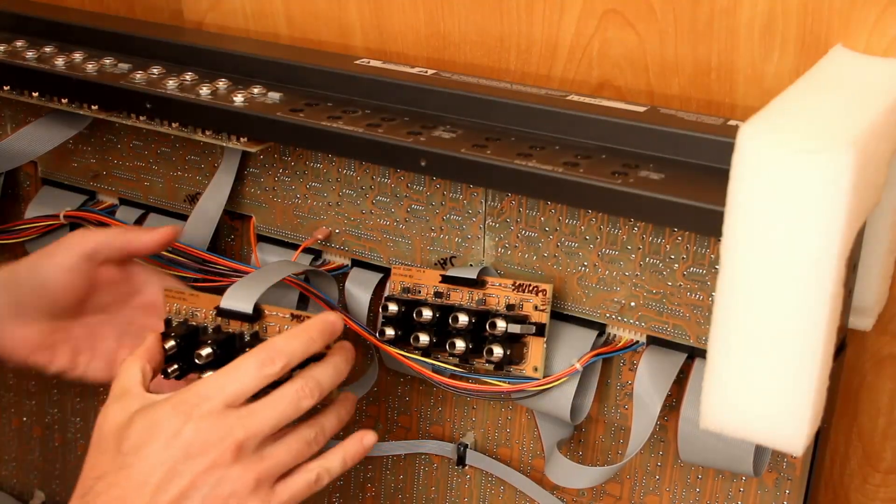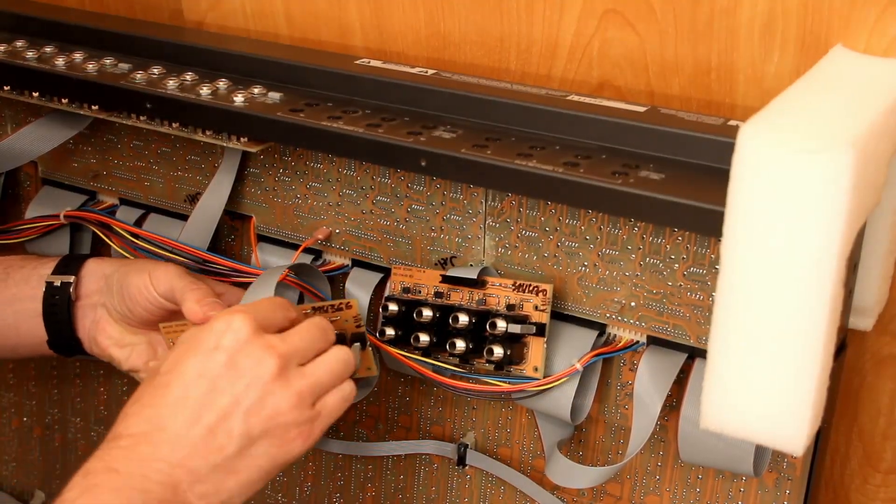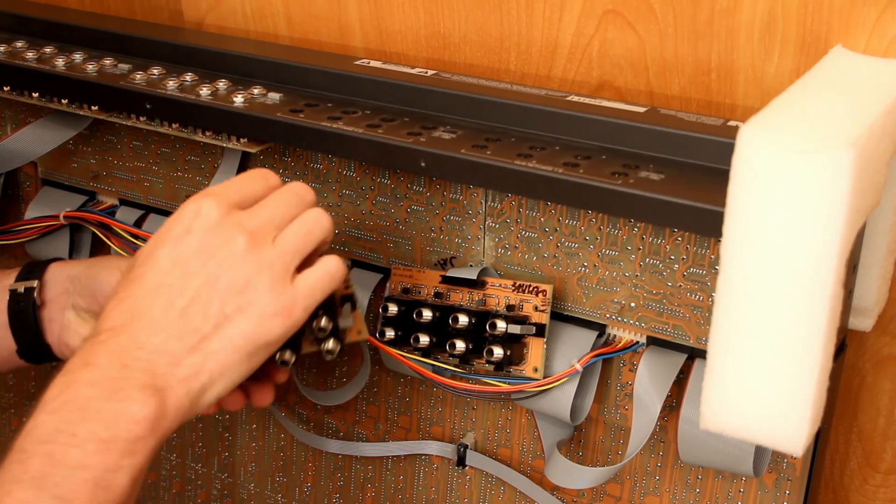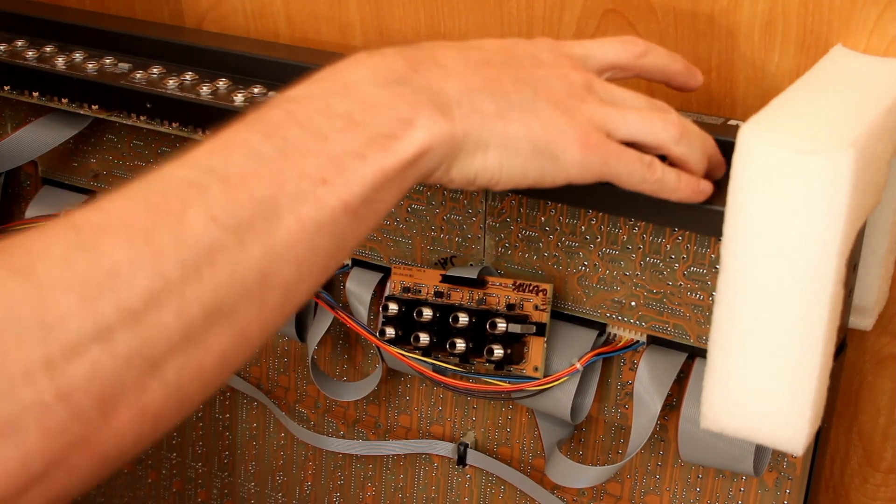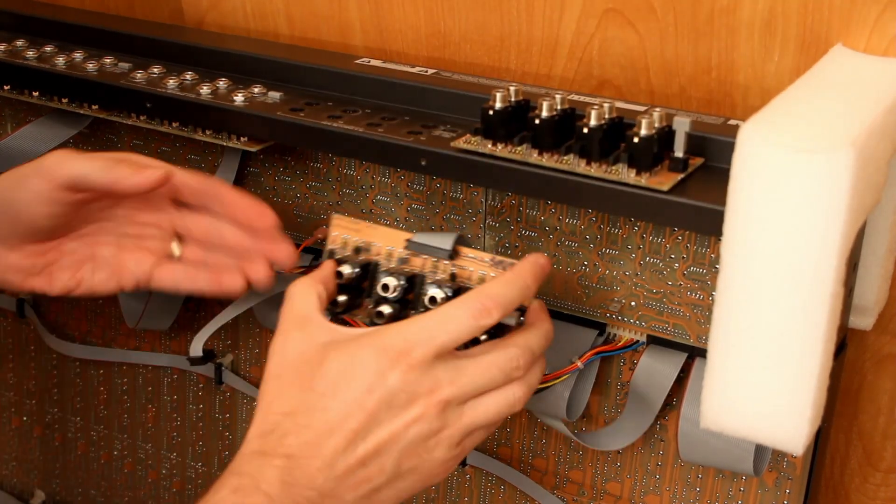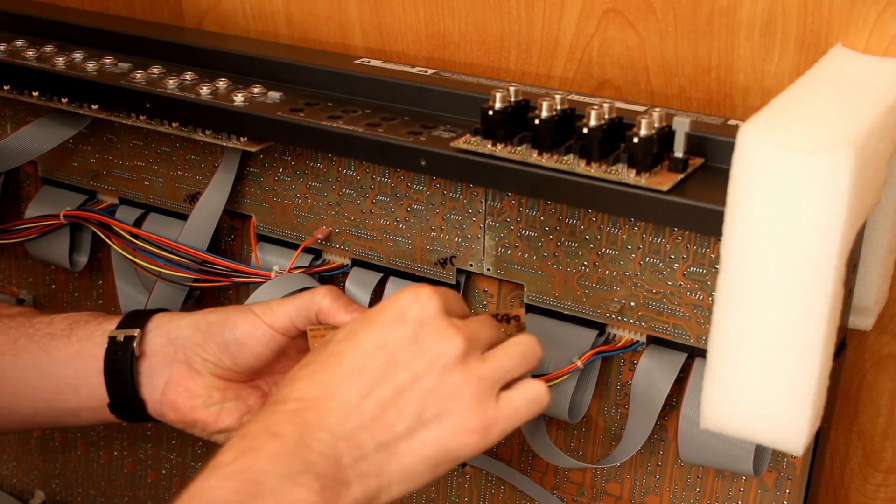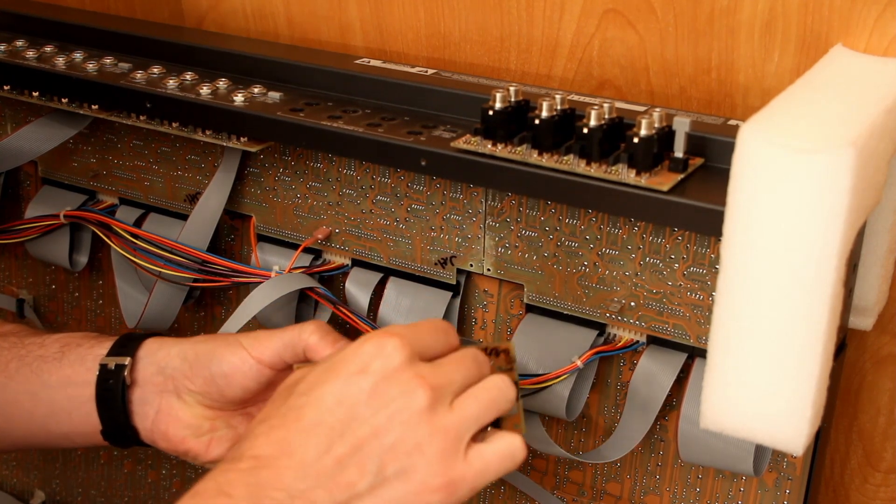If it does, then we know we've got a bad board. If it doesn't, then we know it's something further up the chain, probably the ribbon cable. If it's deeper than that, then I may be in over my head, but let's see what happens.